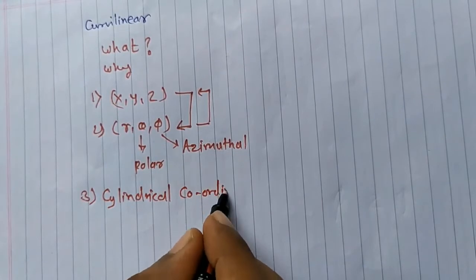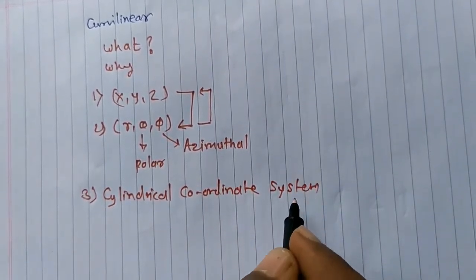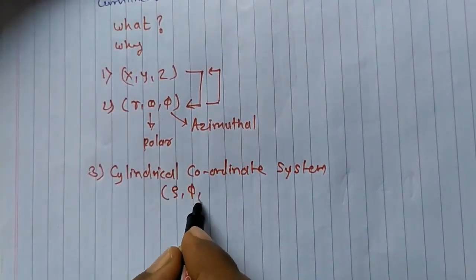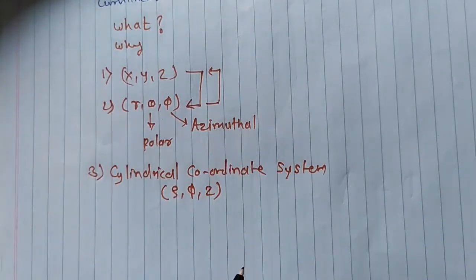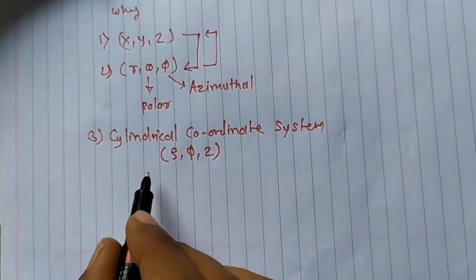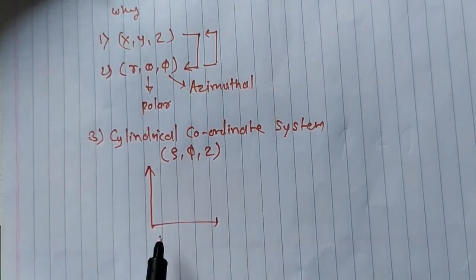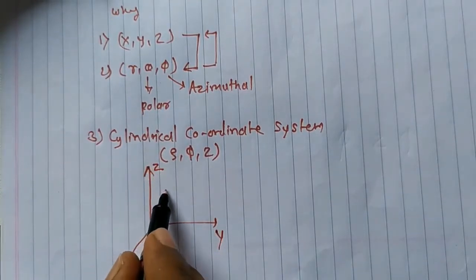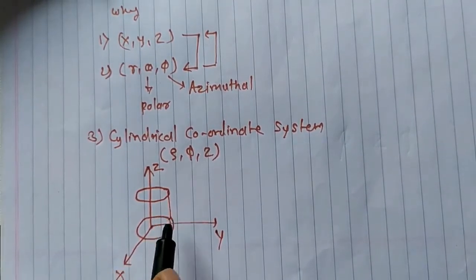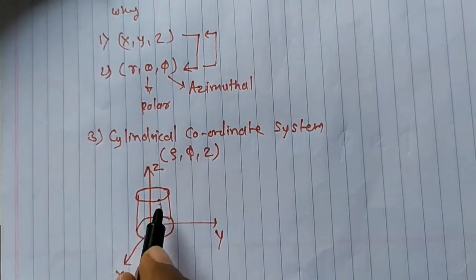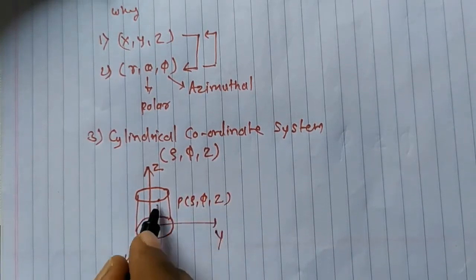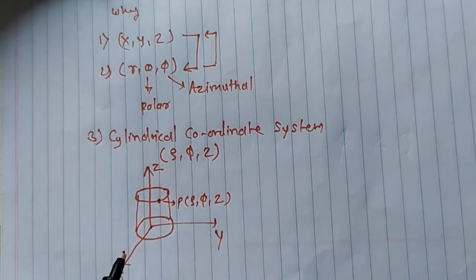Now we will start with the cylindrical coordinate system. The coordinates of the cylindrical coordinate system are rho, phi, and z. Phi is called the azimuthal angle here as well. I will draw a diagram in order to understand these coordinates. I will draw the x, y, z axes and then draw a cylinder. This is some point on the cylinder, say point P, whose coordinates are rho, phi, z.